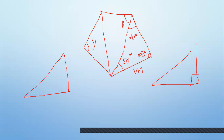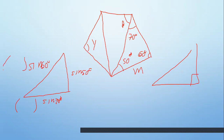Mira, tienes 60. Hazle el opuesto: seno de 60 grados. ¿Qué tienes aquí? Opuesto: seno de 50 grados. ¿Y aquí? 70: seno de 70 grados. Sigues usando el seno, una razón trigonométrica. Si aquí tienes M, lo que estás haciendo es multiplicar por una constante. Multiplica por M y divide lo que tienes allí. M por seno de 70. Ya tienes las longitudes con solo ángulos y lados.